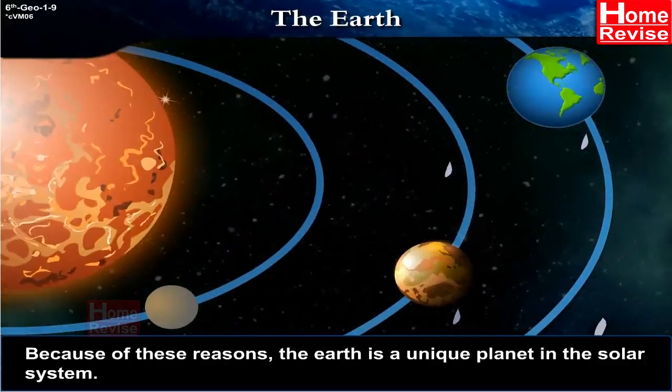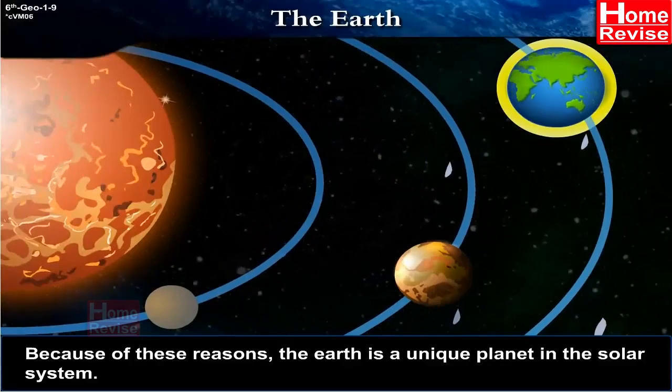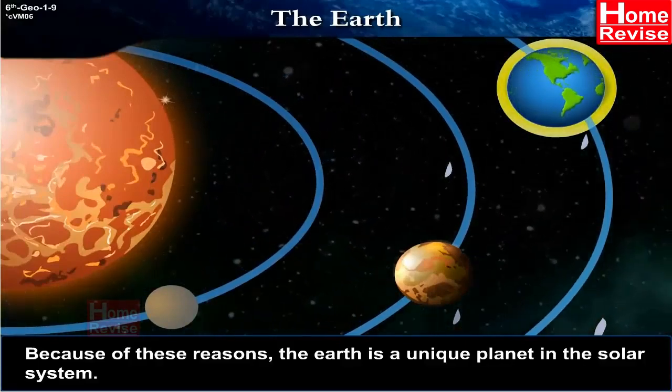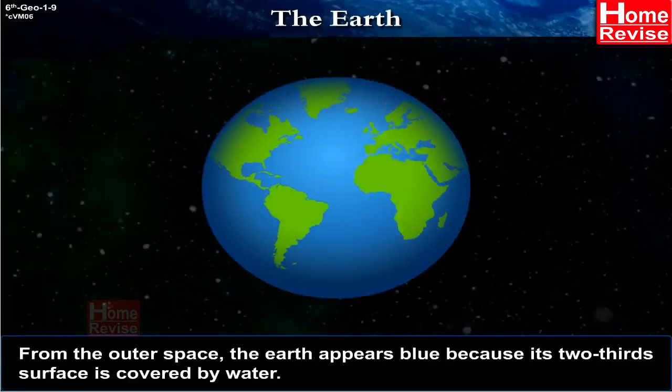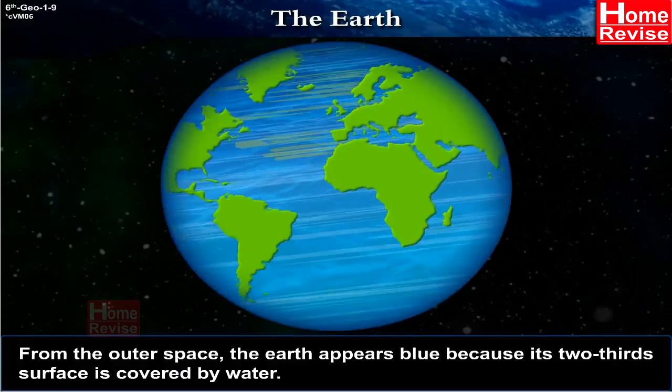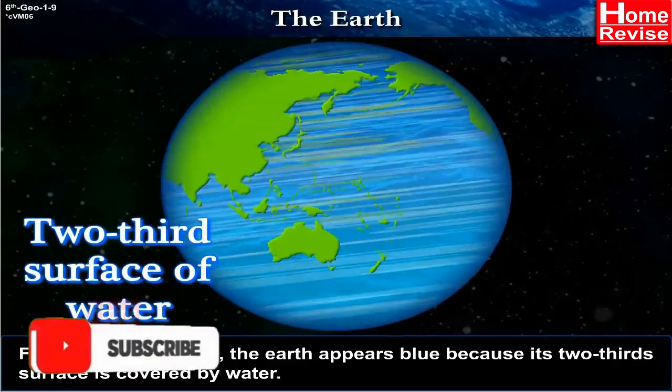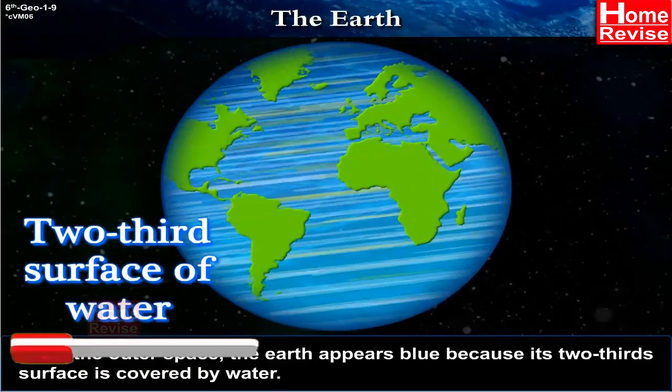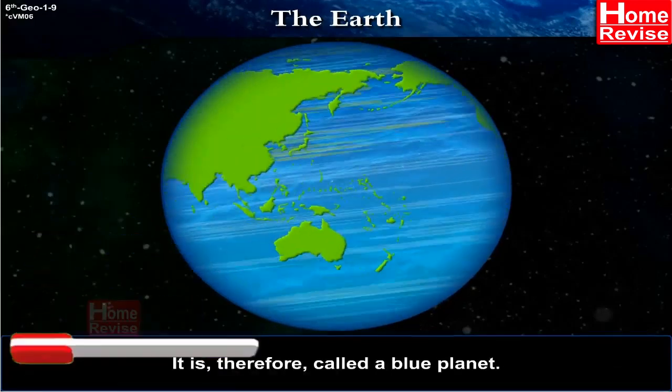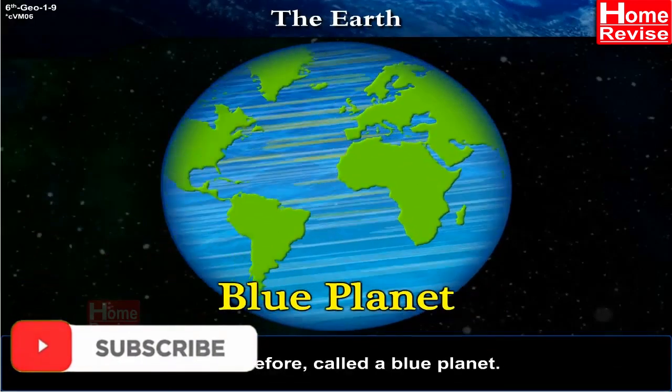Because of these reasons, the Earth is a unique planet in the solar system. From outer space, the Earth appears blue because its two-thirds surface is covered by water. It is therefore called a blue planet.